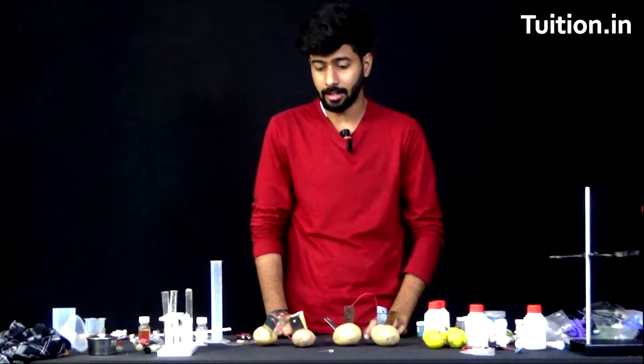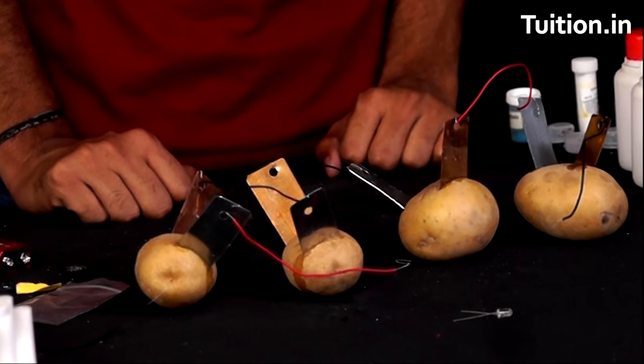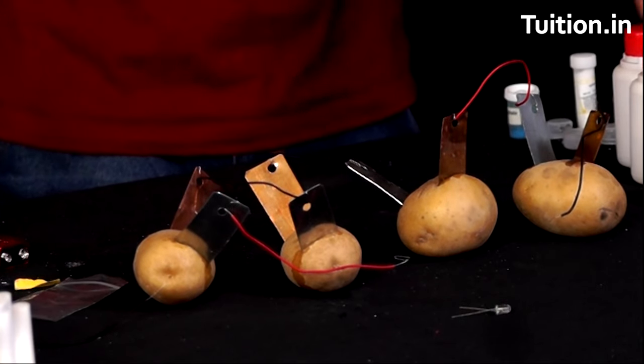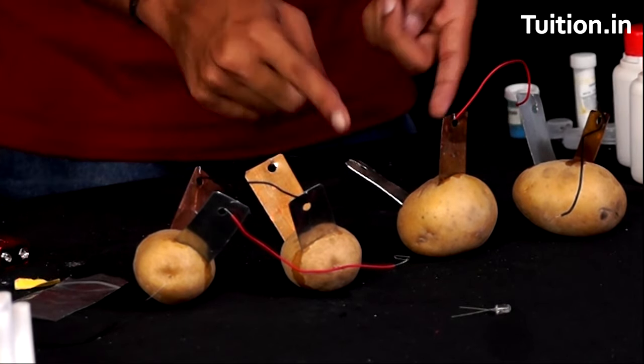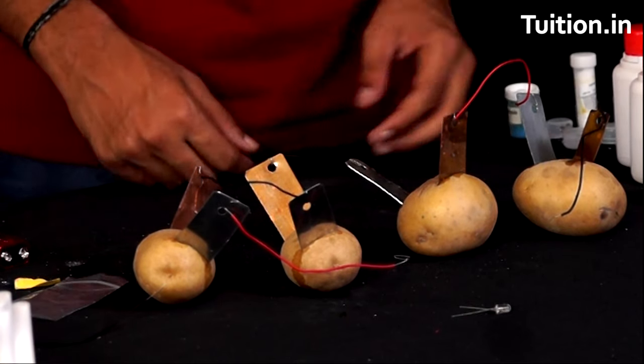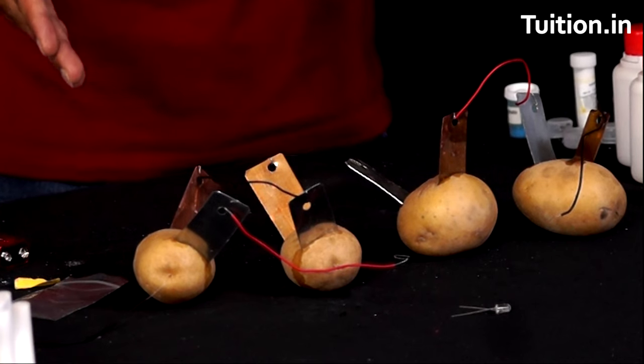So I have made a similar setup with four potatoes as well. Your copper plate is acting as the positive terminal. Zinc is acting as the negative terminal. And the connections are similar: zinc to copper, zinc to copper, zinc to copper, alternate connections. It's a series battery. Each potato is providing a certain potential. And since all of them are connected in series...